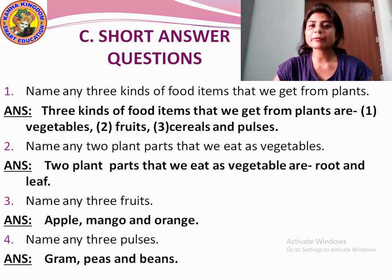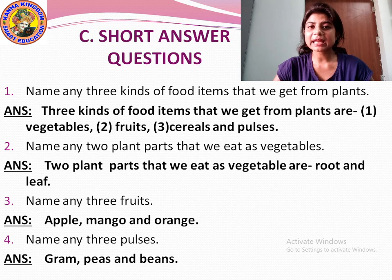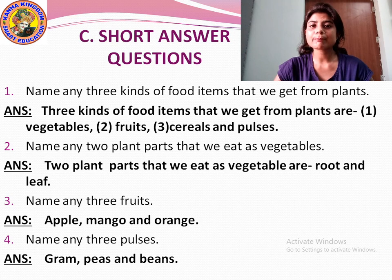Question number four: Name any three pulses — gram, peas and beans.